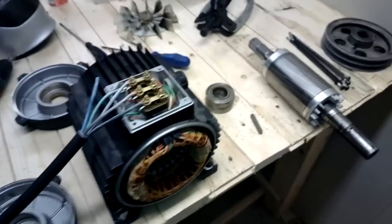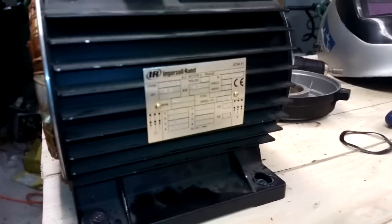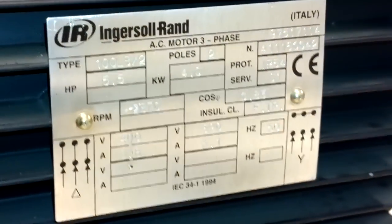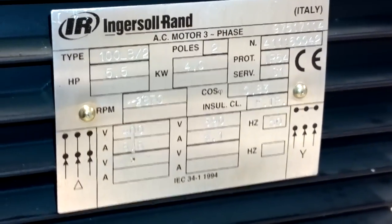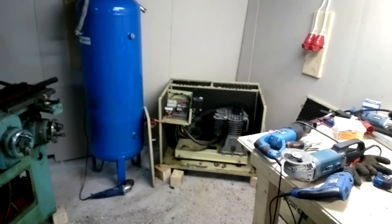And by the way, this is a four kilowatt Italian made motor. You can see the number plate, and it is from my Ingersoll Rand air compressor right there.